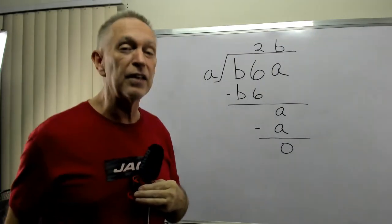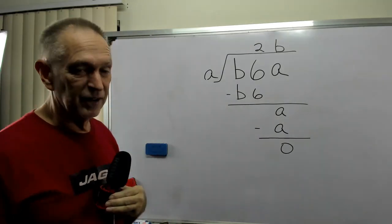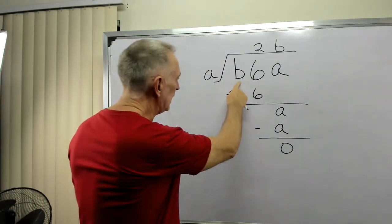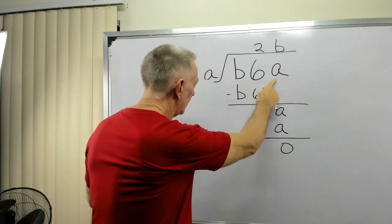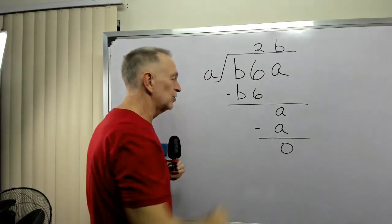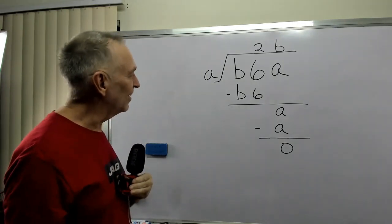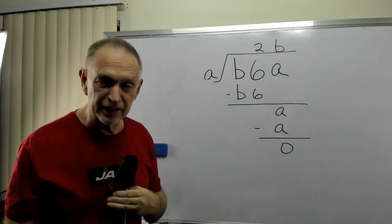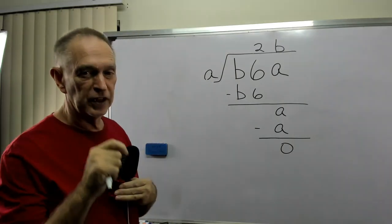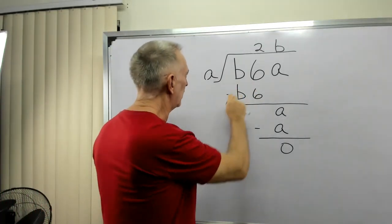Hey, you seventh, eighth graders, it's good exercise for your mind. Let's get after it here. We have B6A divided by A and that equals 2B. How do we always do these? Just begin. Walk through the process that you would normally do and then see what shakes out.